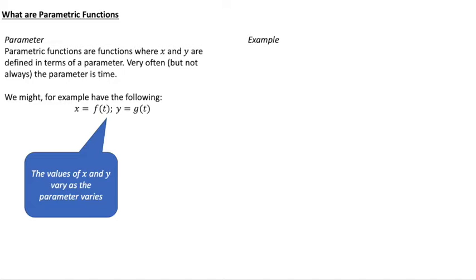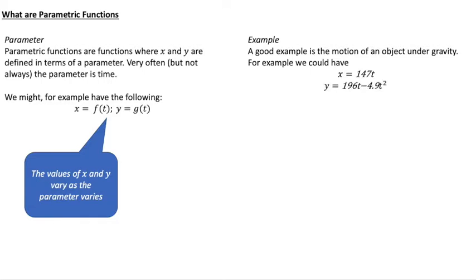So we'll have a look at an example and a good example is the motion of an object under gravity. Depending on the initial velocity of an object, as an example we could have this situation where our x value equals 147t and our y value is 196t minus 4.9t squared. Now that looks a bit horrible but it's only the numbers that are horrible. Basically we have what would be a straight line for the x coordinate and what would be a quadratic for the y coordinate.